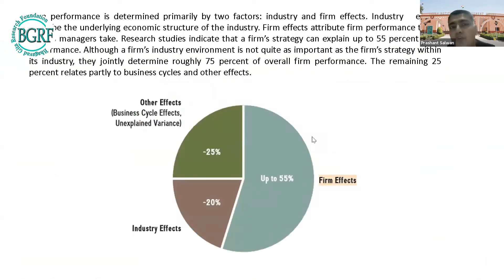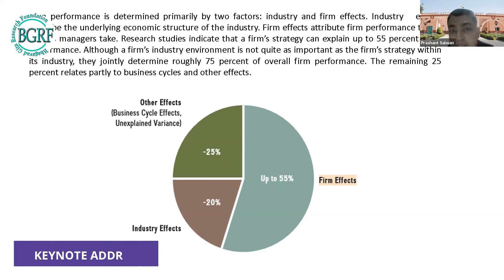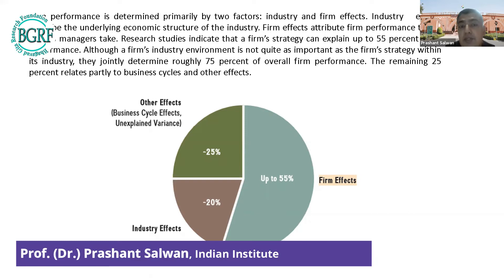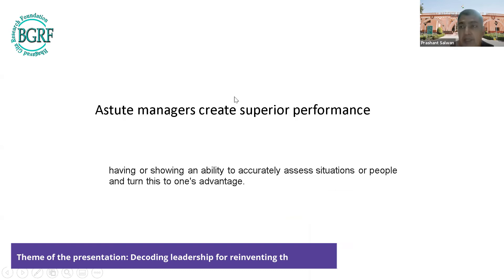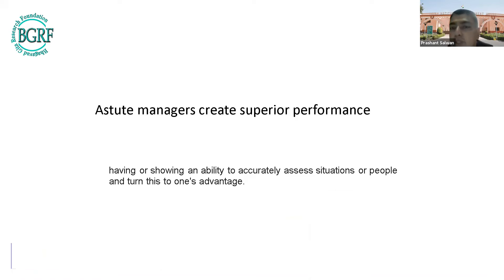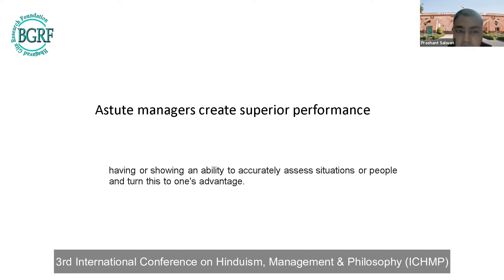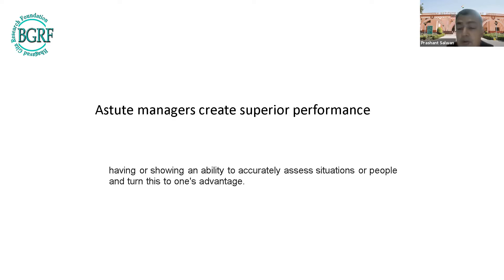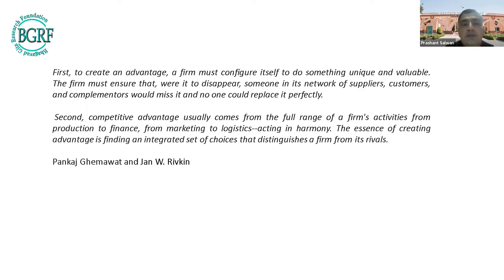Strategy research shows firm performance is determined by two factors: industry effects (the underlying economic structure) and firm effects (actions of management). Studies indicate firm strategy can explain up to 55 percent of performance, and together with industry environment they jointly determine 75 percent of overall firm performance. The remaining percentage relates to business cycles. Astute managers — those who accurately assess situations and turn them to advantage — create superior performance.